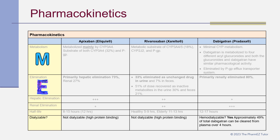Are any of the DOACs dialyzable? Apixaban and rivaroxaban are not dialyzable because of their high protein binding. However, dabigatran is hemodialyzable — approximately 49% of total dabigatran can be cleared from plasma over 4 hours.